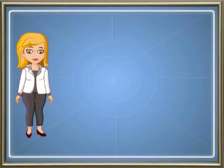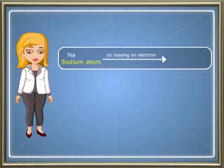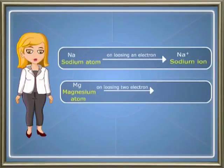An atom or a group of atoms can exist independently with charges. These are formed by loss or gain of electrons and are called radicals, or more commonly as ions. Sodium atom on losing an electron becomes sodium ion. Magnesium atom on losing two electrons becomes magnesium ion. These radicals formed by the loss of one or more electrons are described as electro positive and are called basic radicals or cations.